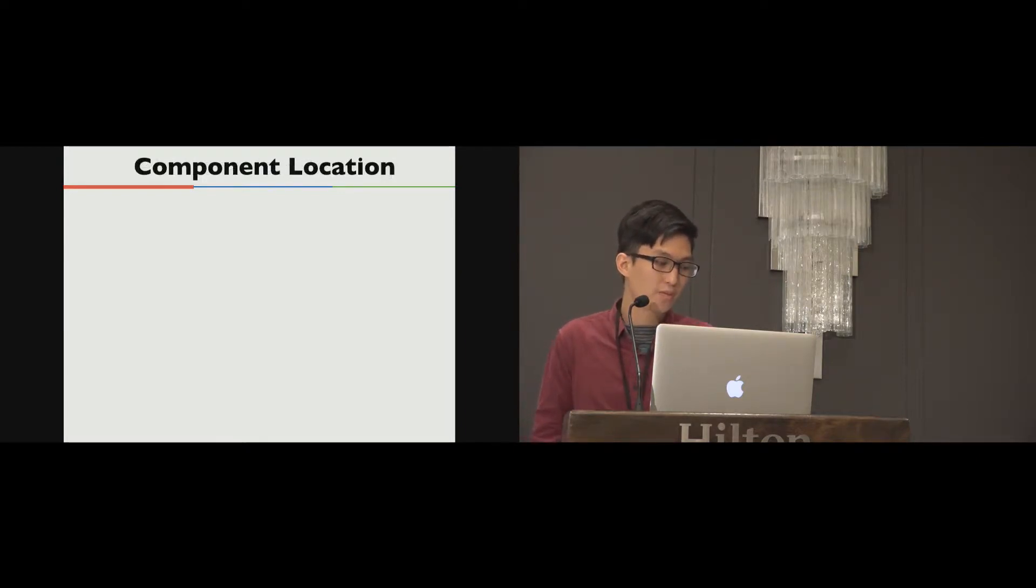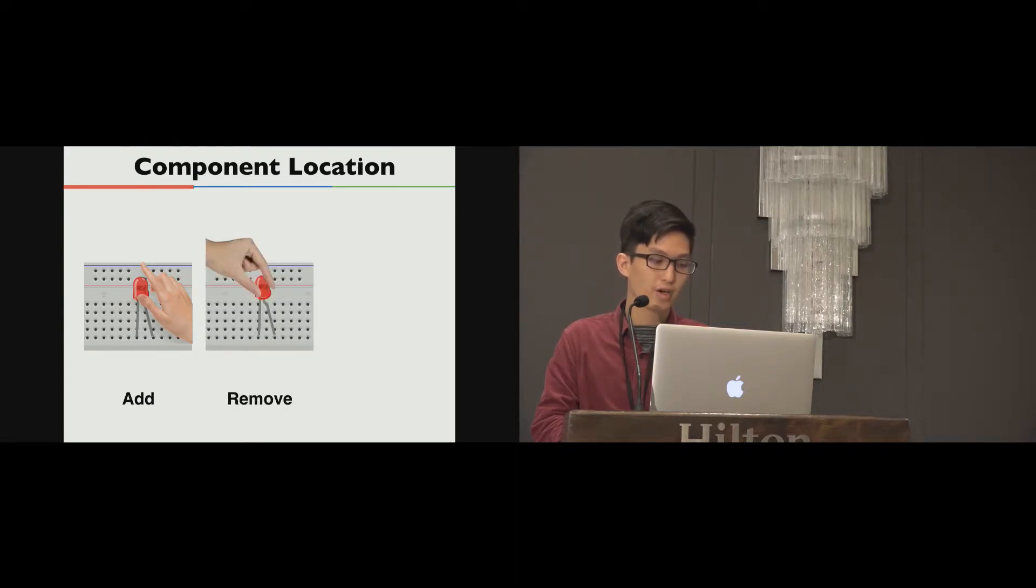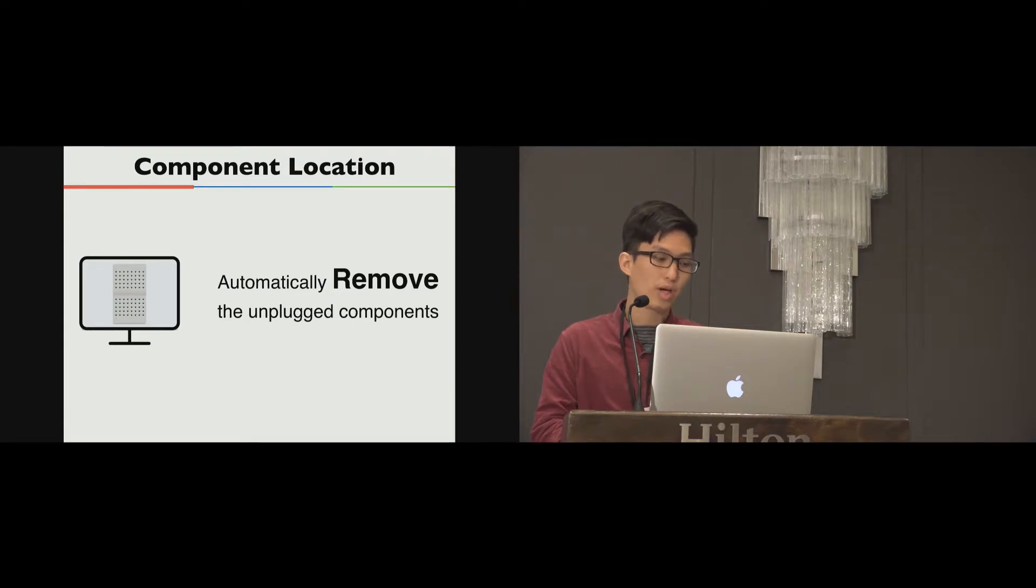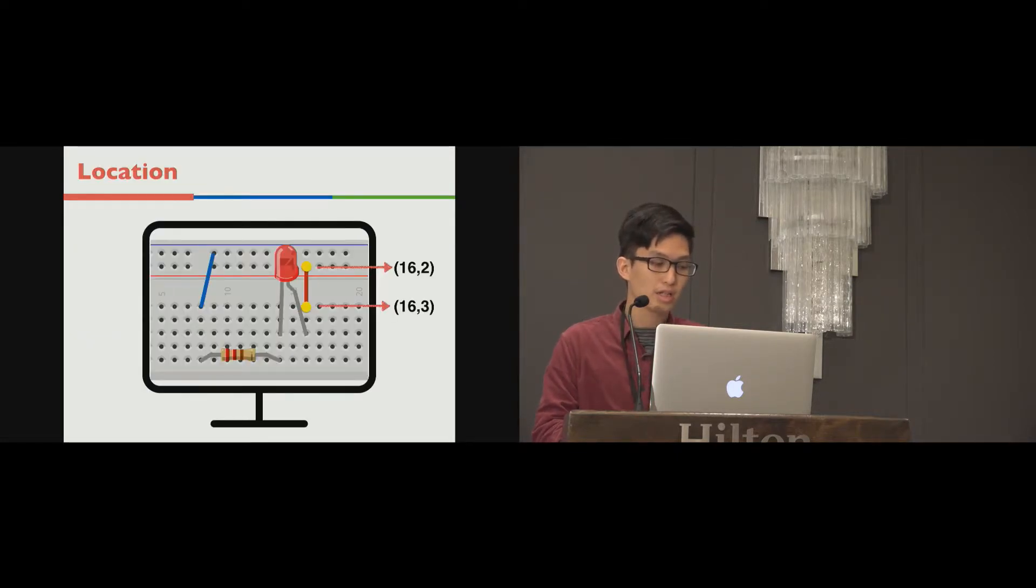There are three types of behavior about component location. First, the user adds a component on a breadboard. Second, the user removes a component from a breadboard. Third, the user changes the pin of a component on a breadboard. By detecting this behavior, we can know where the user placed the component. So according to these actions, we implement corresponding functions. First, we group new pins within a small time window for a component. Now we set the window time as two seconds. Also, we will automatically remove the unplugging components according to the status of clips. So we check the changing pin of a component as the user adjusts one pin of a component.